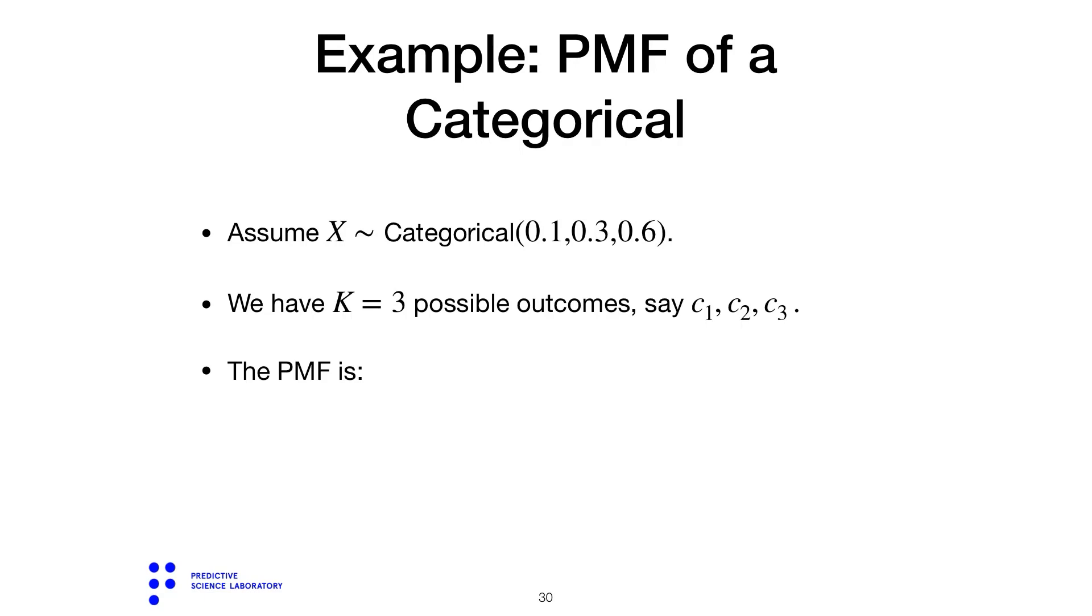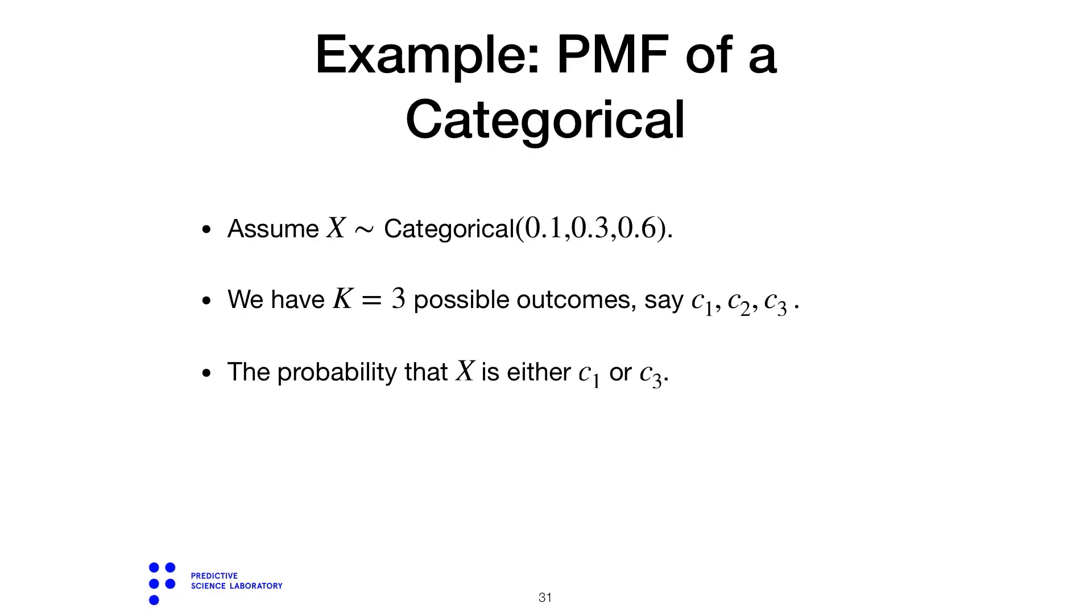The probability mass function of this random variable is very simple to write down because it's already given to us. The probability that X takes the first label is 0.1, the probability that X takes the second label is 0.3, and the probability that X takes the third label is 0.6.